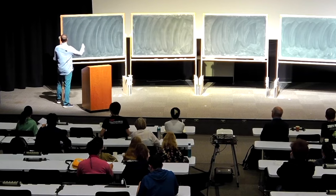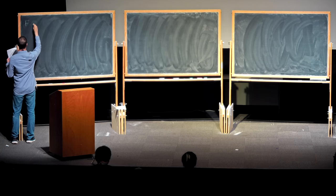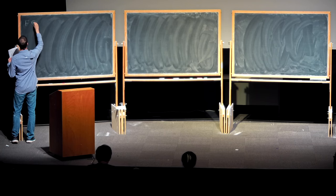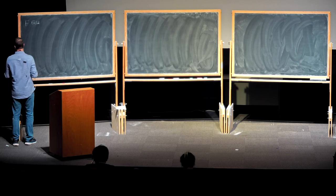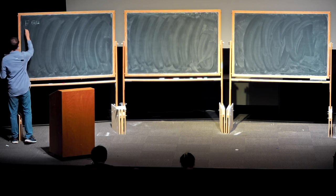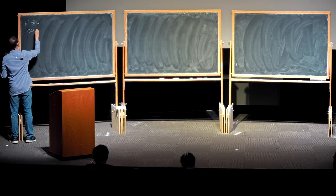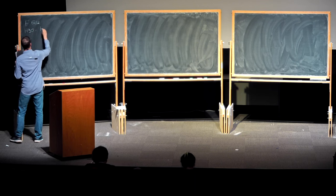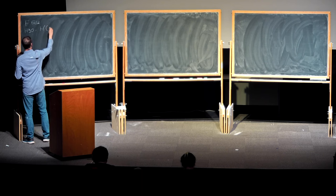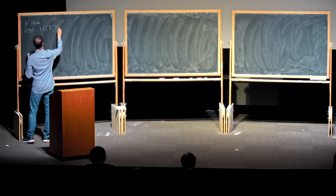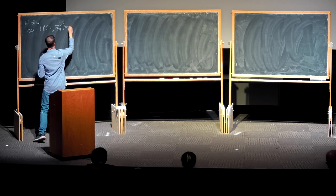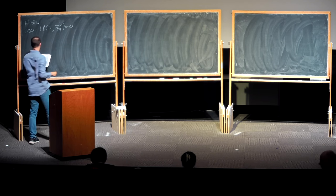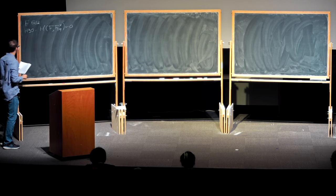Let us begin. Suppose F is a field. Hilbert 90 tells us that H1(F, F*) = 0. This is a fundamental result in Galois cohomology.